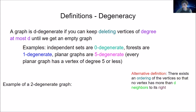There's an important alternative definition of degeneracy: there exists an ordering of the vertices — numbering them one through n — so that no vertex has more than D neighbors to its right. We see this by looking at the deletion ordering: once a vertex is deleted, it can have at most D neighbors remaining, and those are precisely the neighbors that appear to the right — the ones with a larger number.